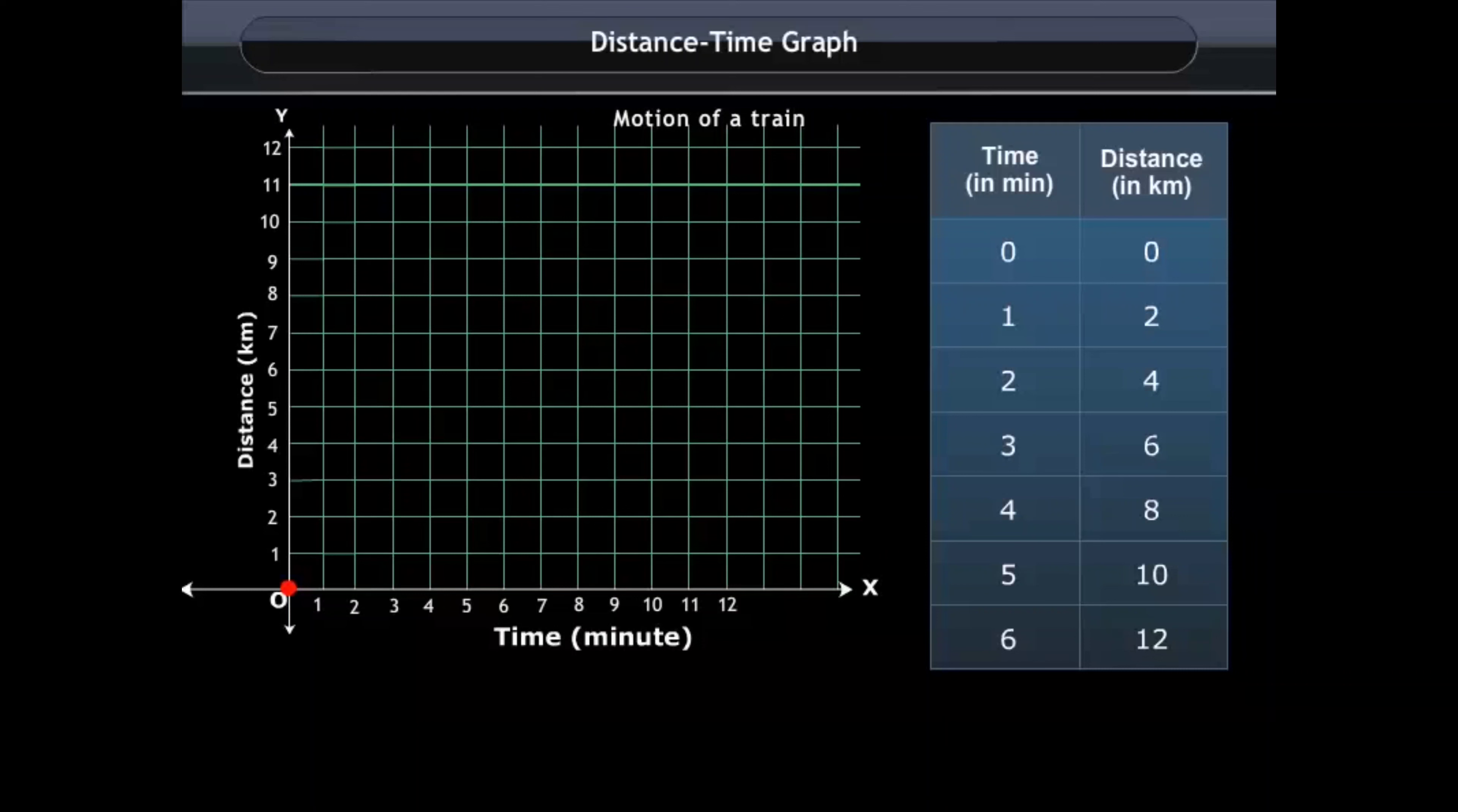In the second one, the body covers 2 km in 1 minute. The second point on the graph represents it. This point corresponds to 1 minute on the X axis and 2 km on the Y axis. Similarly, plot the other points on the graph.